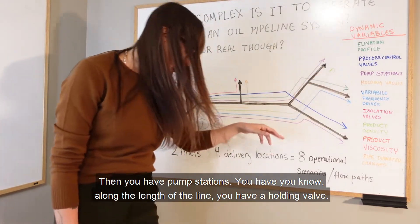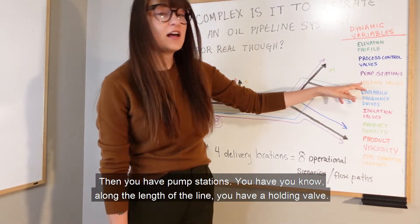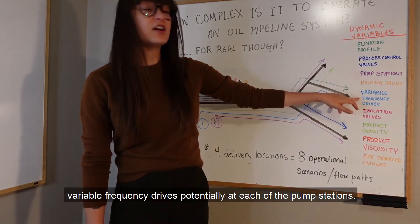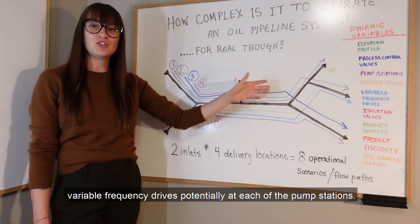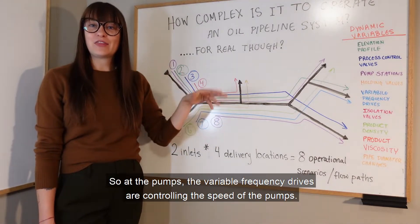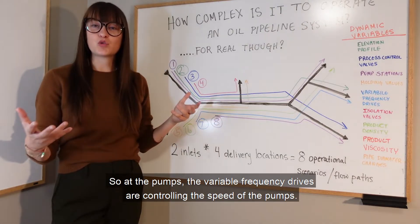Then you have pump stations along the length of line. You have holding valves at each delivery point. Then you're going to have variable frequency drives potentially at each of the pump stations. At the pumps, the variable frequency drives are controlling the speed of the pumps.